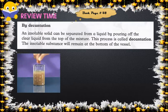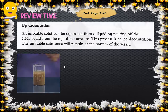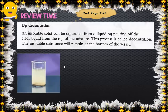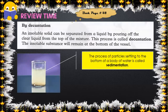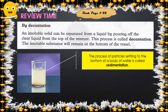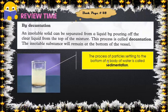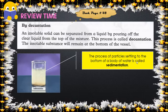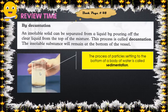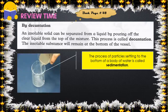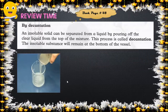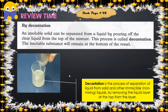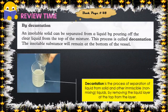We take a mixture of sand and water, and after some time we find that all the sand settles down at the bottom. This process — when particles settle down at the bottom — is called sedimentation. When we pour out the top layer of water, that is decantation.